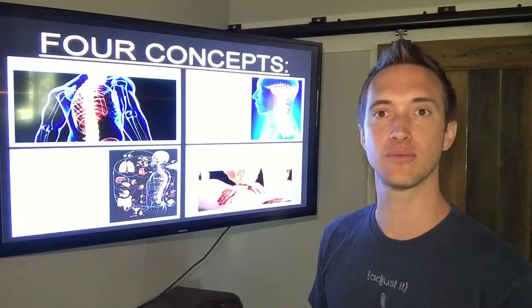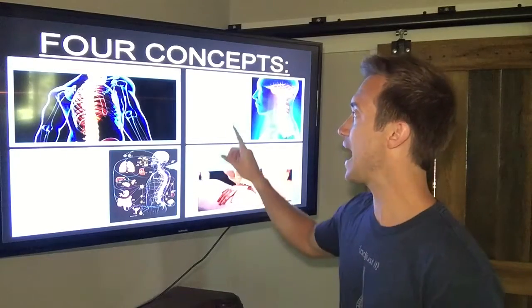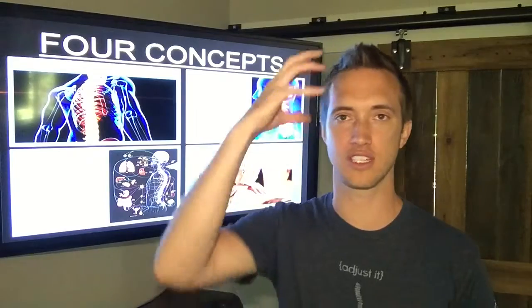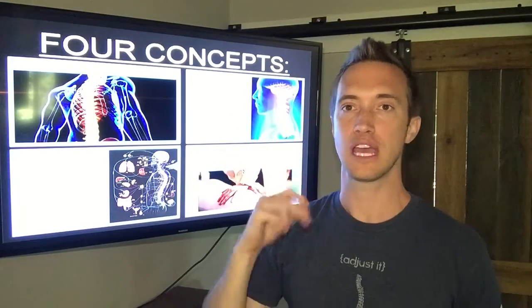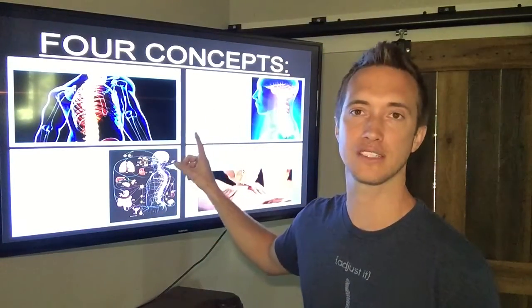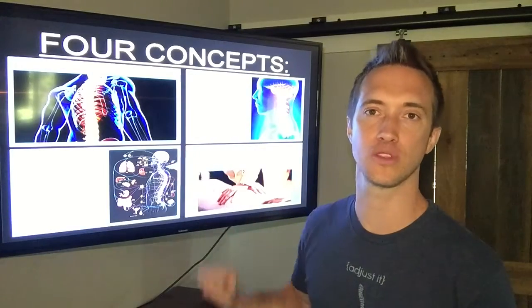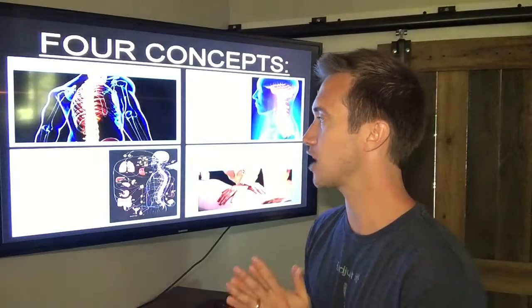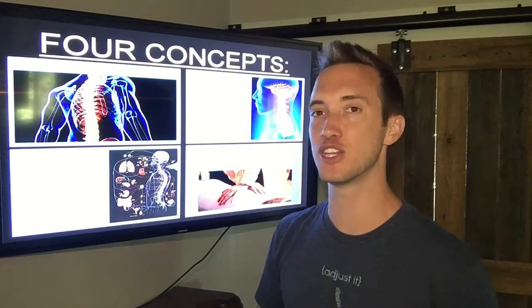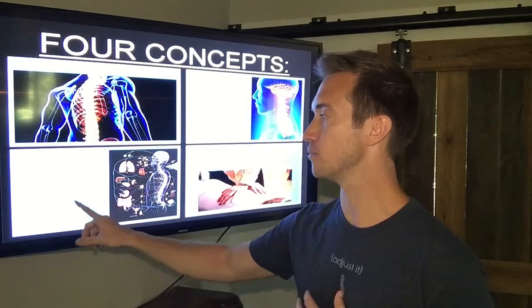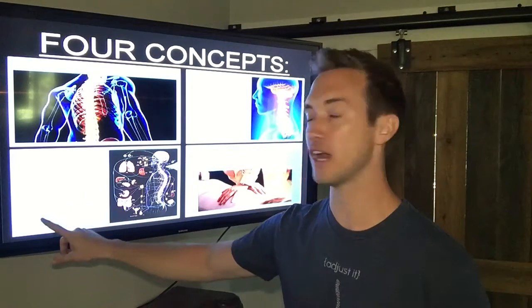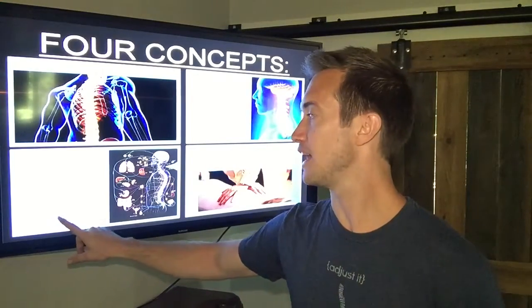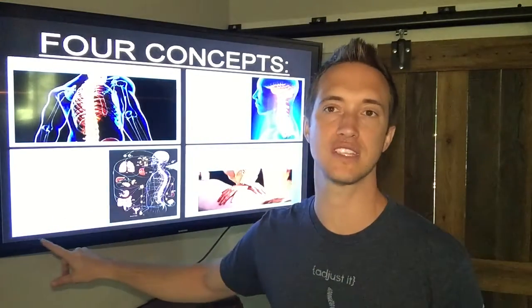The next section will be abnormal spinal mechanics, which is called a vertebral subluxation. The literature is clear, it's called a vertebral subluxation, that interferes with the central nervous system. Your central nervous system is your brain and your spinal cord. If you have poor biomechanics, poor motion, that interferes with your brain and your spinal cord.